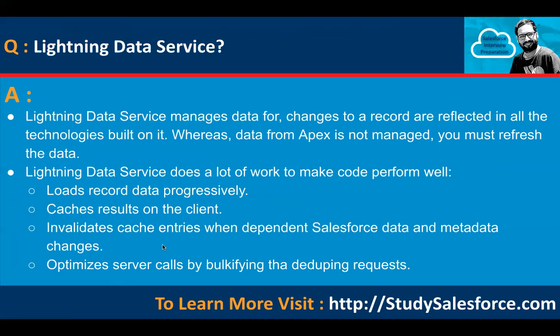What is Lightning Data Service versus Apex? Lightning Data Service manages data so that changes to a record are reflected in all technologies built on it. Data from Apex is not managed — you must refresh the data manually. With Lightning Data Service, you don't need to write Apex code, but if you want to customize the predefined implementation, you'll need Apex. Lightning Data Service loads record data progressively, caches results on the client, invalidates cache entries when dependent Salesforce data or metadata changes, and optimizes server calls by bulkifying and deduplicating requests.